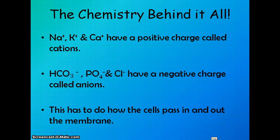The chemistry behind it all, part two. The common electrolytes - sodium, potassium, and calcium - take on a positive charge in the fluid and are called cations. Hydrocarbonate, phosphate, and chloride take on negative charges called anions. The concentrations and charges of these electrolytes have a lot to do with how the fluids move through the body and how they pass in and out of the membrane of the cells.